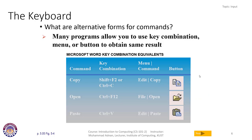Many programs allow you to use key combinations, menus, or buttons to obtain the same result. For example in Microsoft Word, for copy you can press Ctrl+C or Shift+F2, or go to the Edit menu and click Copy, or use the copy icon. For open, you can use Ctrl+F12 or go to File > Open. For paste, we normally use Ctrl+V, or go to Edit > Paste.